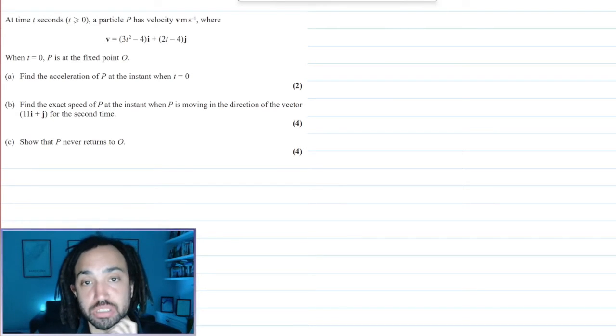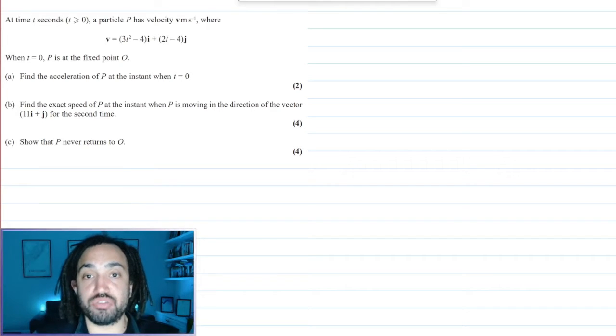We have a particle and the particle has velocity v where v is 3t squared minus 4i plus 2t minus 4j.